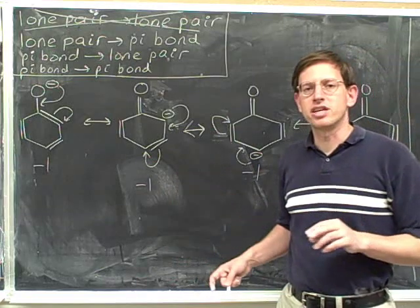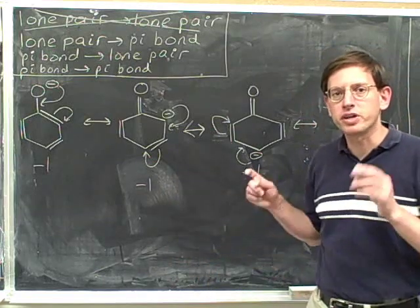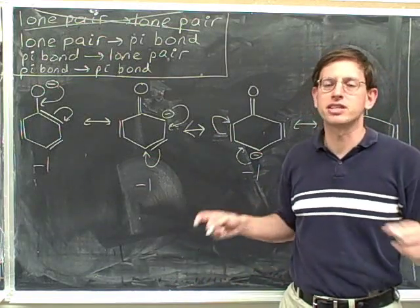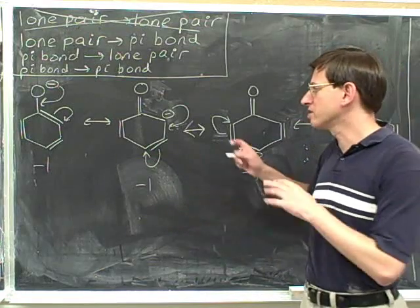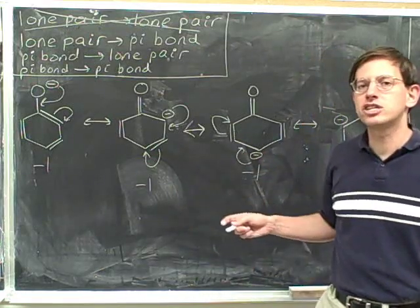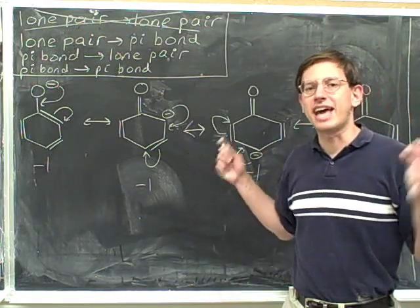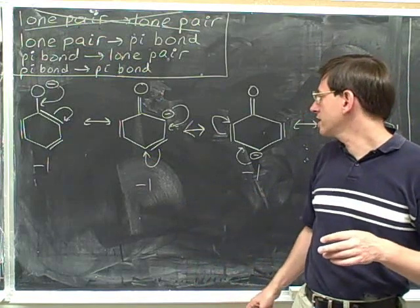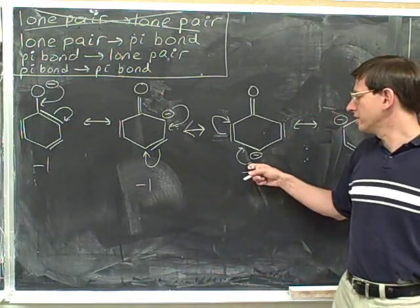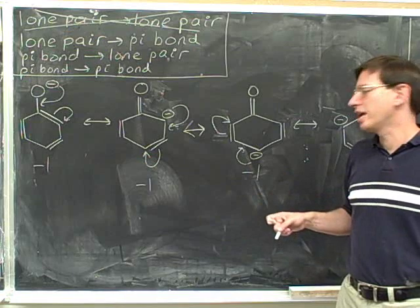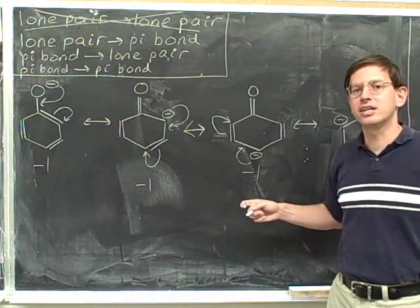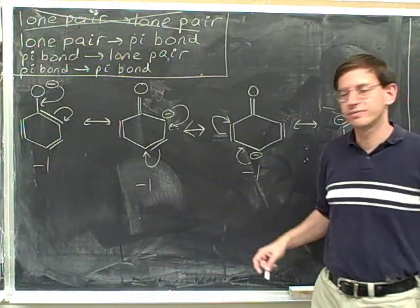Let me emphasize the importance of focusing on the charges. The whole reason we're doing this is to get the charges right. There's a pretty simple rule: when you have multiple arrows, you're always going to change exactly two charges. You're going to change the charge on the atom at the initial tail, and you're going to change the charge on the atom at the final head. And you're not going to change any other charges.